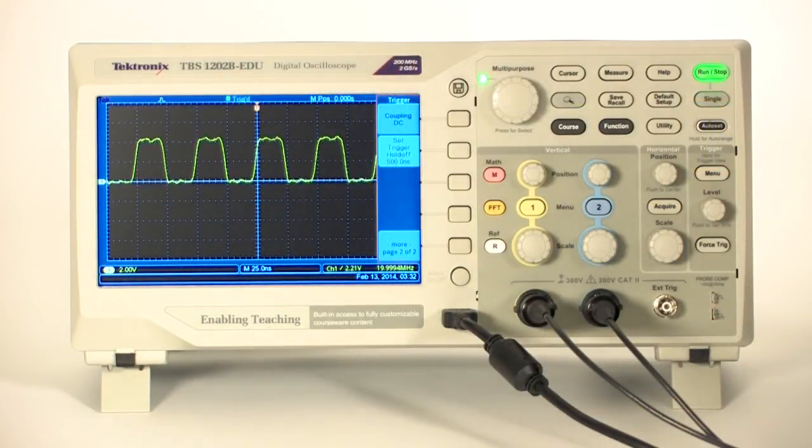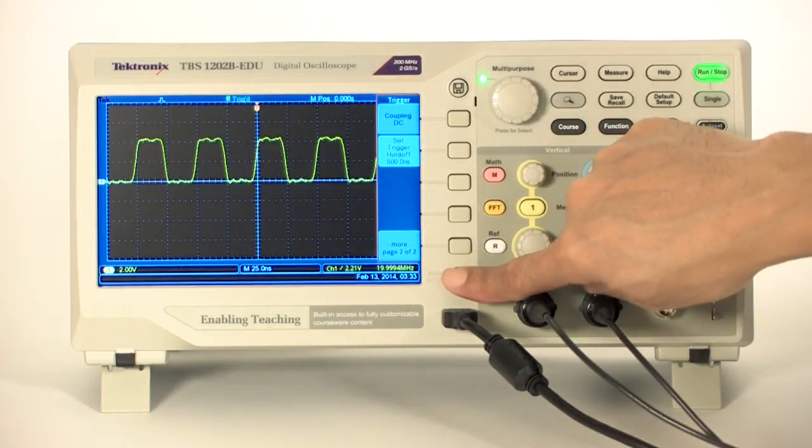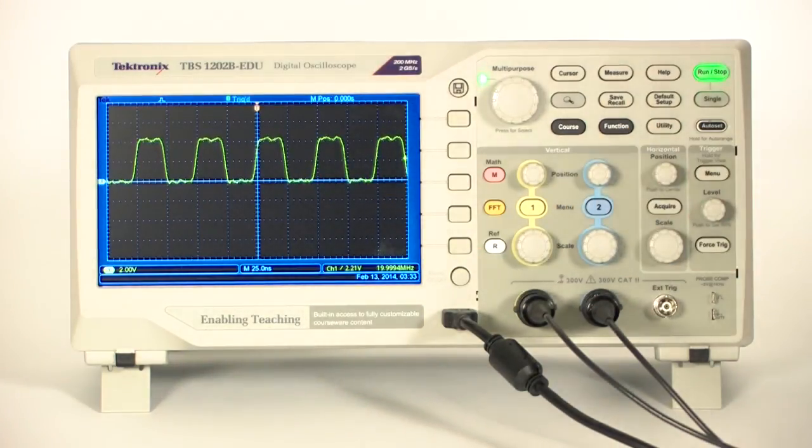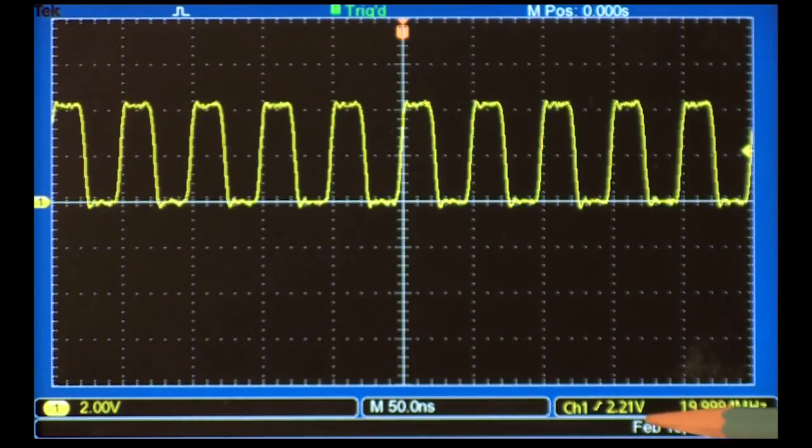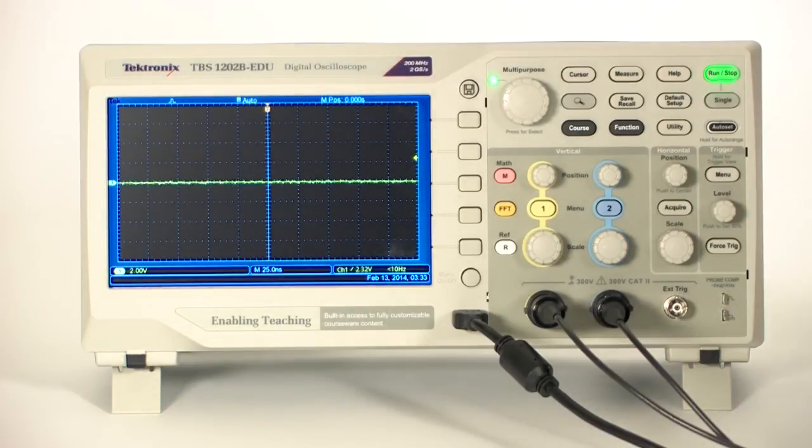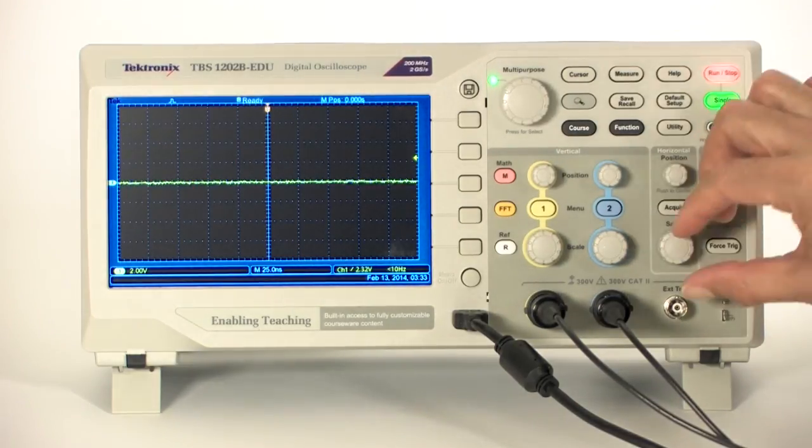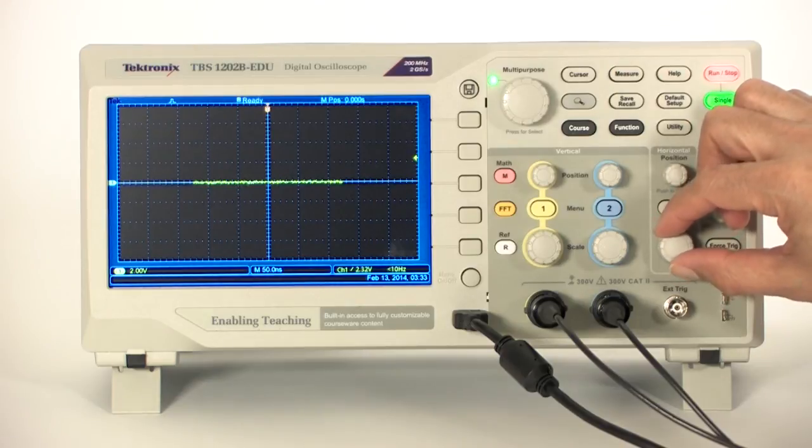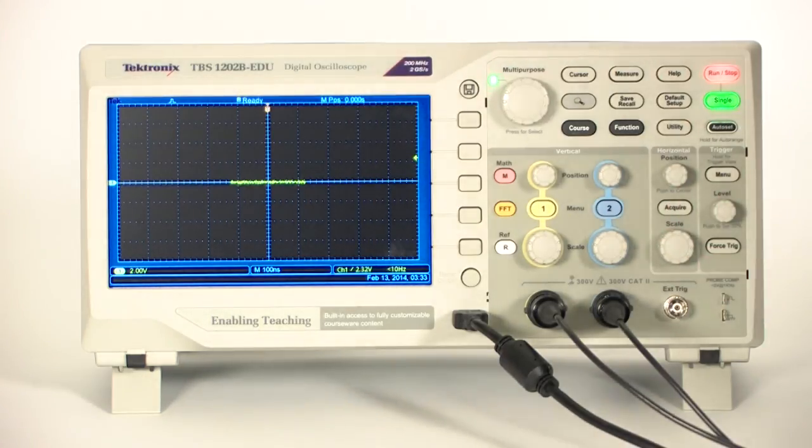Now, let's take a look at a single shot event. Let's say you want to look at the clock as it starts up. To watch the clock start up, the triggering is set to trigger the first time it sees a rising edge that passes through about 2.2 volts. Now, let's use single shot to see the clock starting up. First, I'll set the scope to capture a single shot event. Then, I'll start the clock. The scope captures the first cycle of the clock that goes above 2.2 volts.